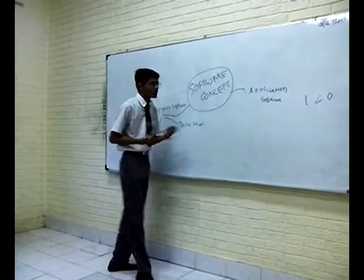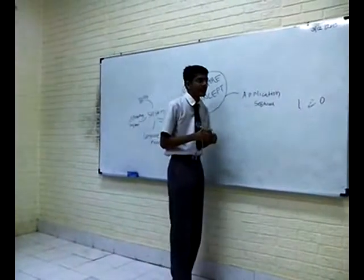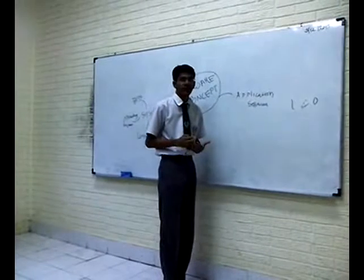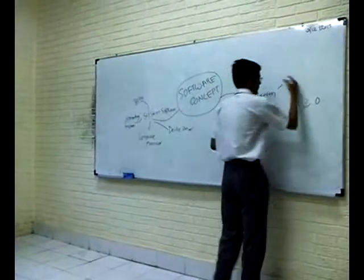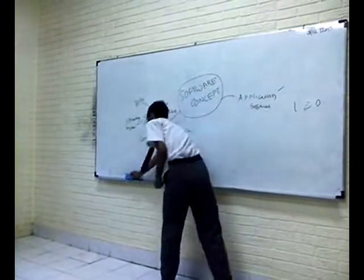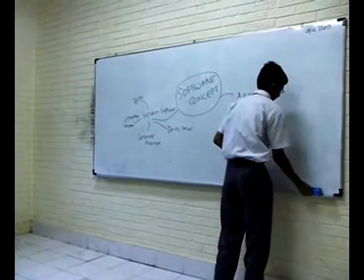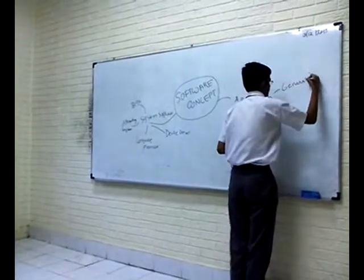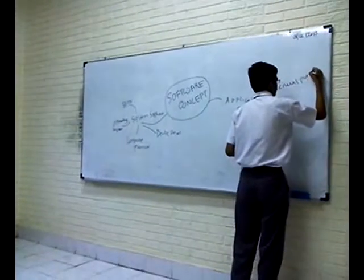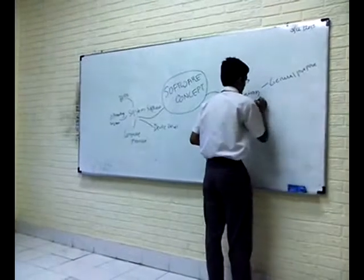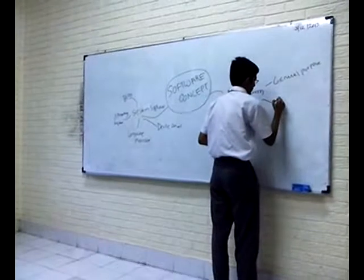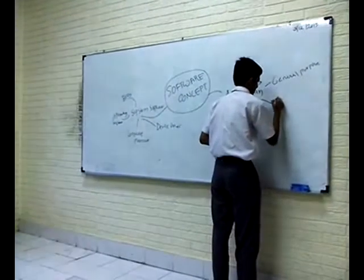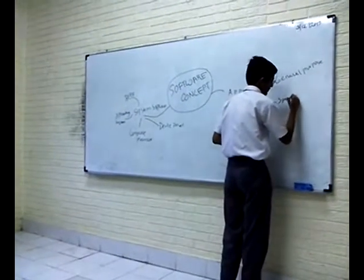Then we move on to application software. Application software is divided into four categories: general purpose, specific purpose, and utility applications.